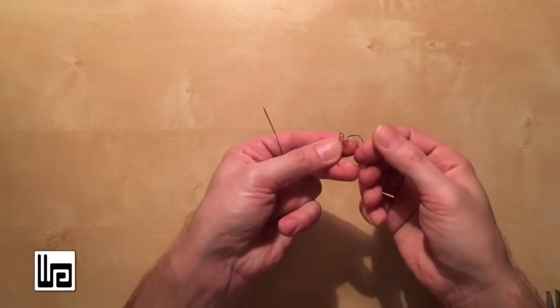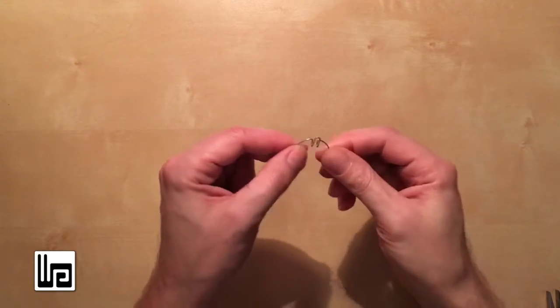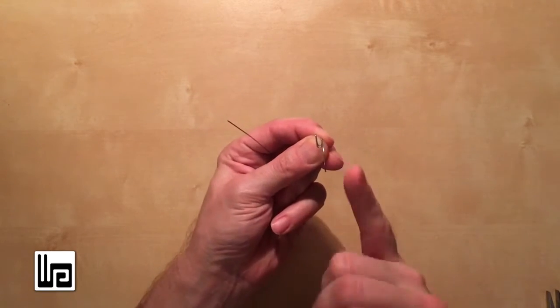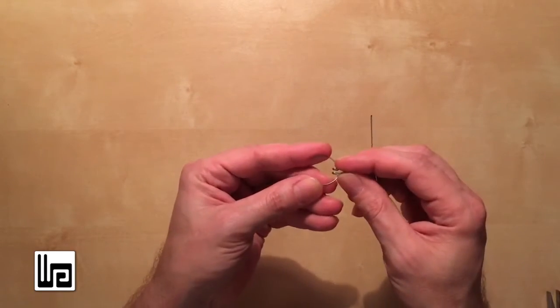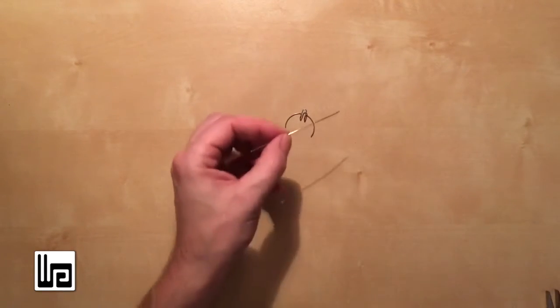The first little wire component I'm going to make I call a parallel loop because the loop sits parallel with the button face. So, take a piece of wire.